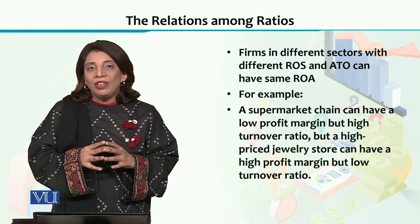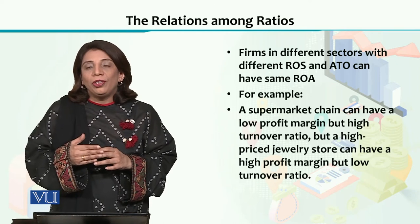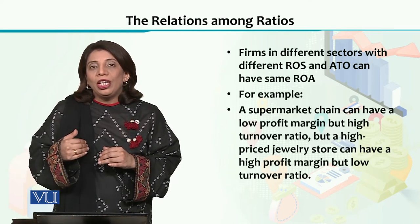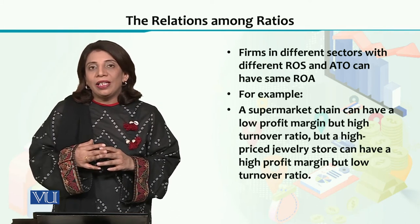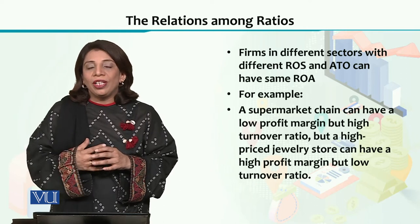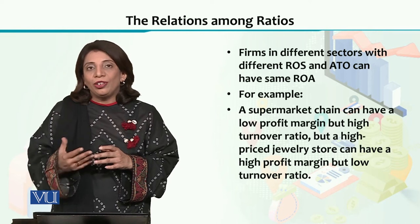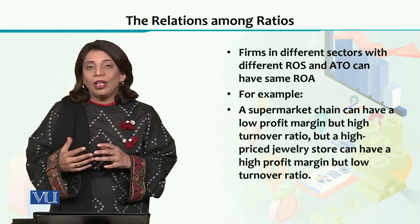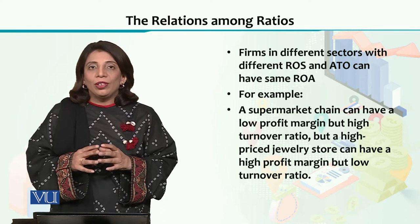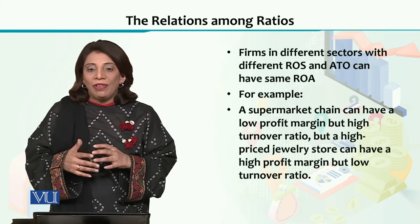The return on sales and the asset turnover ratio are the two components that can change the overall value of ROA. For example, a firm with a higher return on sales and a lower asset turnover ratio can have a certain ROA value, and another firm can have the same ROA even with a different return on sales and asset turnover ratio, because the two are multiplied together — the product may be the same but the composition can vary.